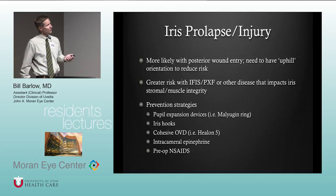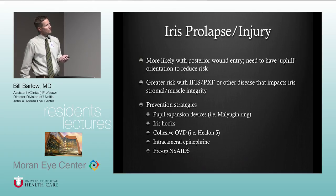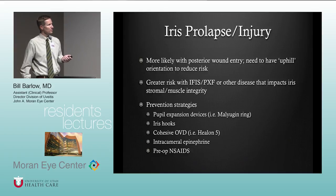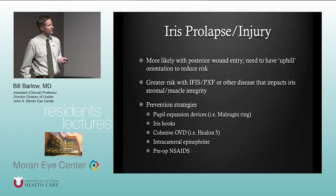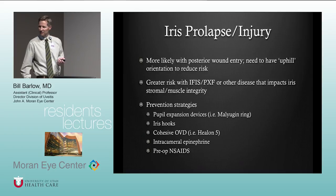Iris prolapse or injury is more likely with a posterior wound entry and short wound — we need an uphill orientation to our wounds to reduce this risk. It's greater with conditions resulting in a floppy iris: Flomax, pseudo-exfoliation, other diseases impacting stromal or muscle integrity. Prevention strategies include pupil expansion devices such as a Malyugin ring or iris hooks.